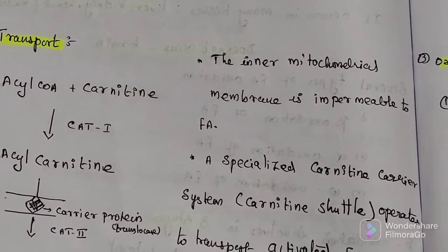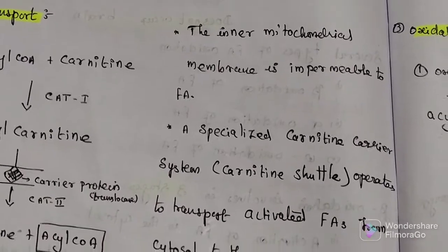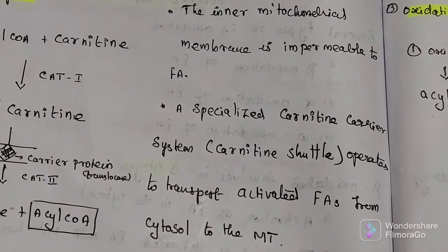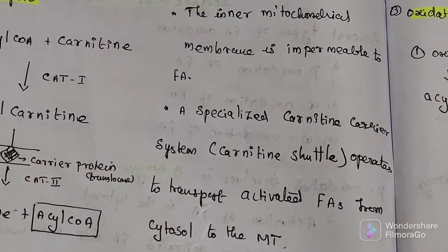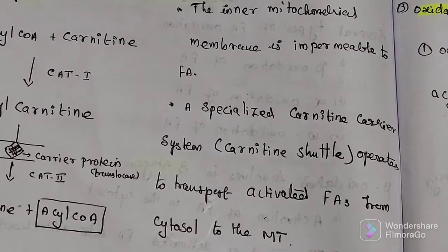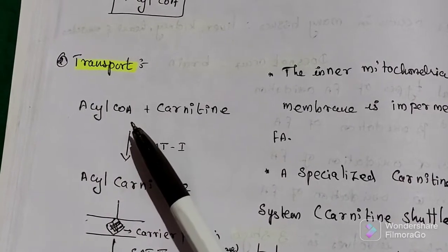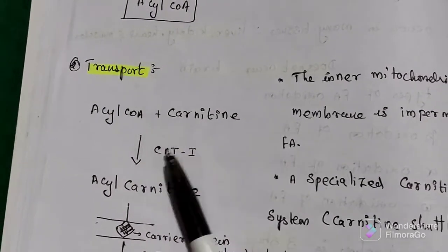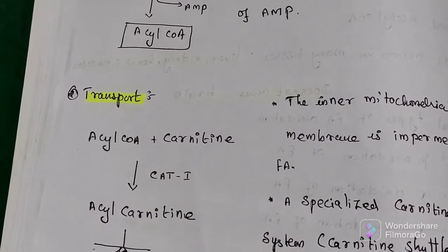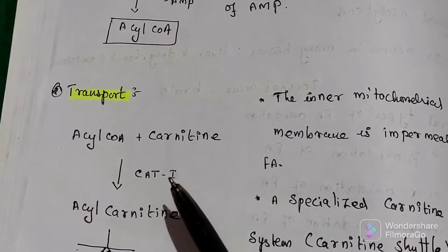Step 2 is transport of activated fatty acid into mitochondria. The inner mitochondrial membrane is impermeable to fatty acids. A specialized carnitine carrier system operates to transport activated fatty acid from the cytosol to the mitochondria. Acyl-CoA combines with carnitine and is converted into acyl-carnitine with the help of enzyme carnitine acyl-transferase-1.